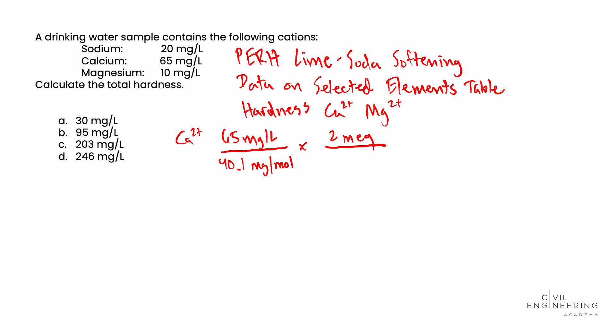In that equation, you'll see that there are two moles of calcium. So we multiply it by the two molar equivalents per mole, multiplied by 50 mg of calcium carbonate (CaCO3). How do we get that 50? We look back in the data on selected elements table and see that the equivalent weight for calcium carbonate is 50 mg. In the lime soda softening equations, calcium carbonate has a 1 as a coefficient out front, so it's just over 1 mEq.